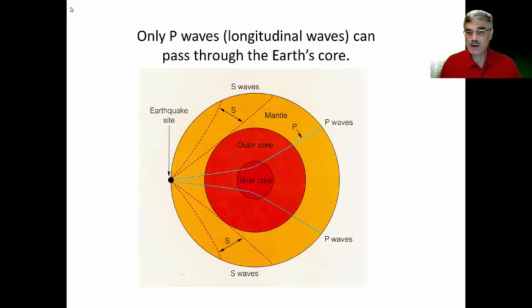So again, the P wave and the S wave are the primary and secondary seismic waves that follow an earthquake, and that can be measured at any distance from an earthquake.